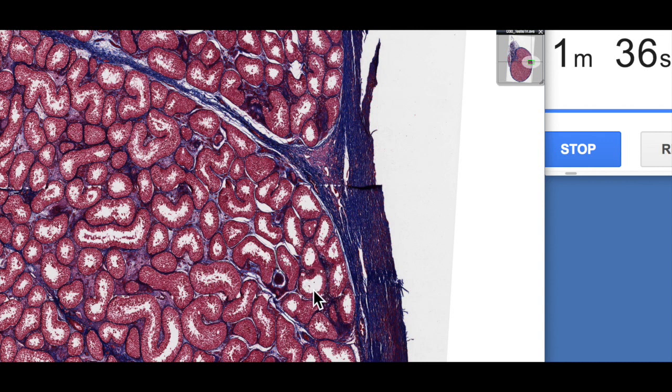These lumen here, these are actually seminiferous tubules. These are blind-ended tubules within which spermatogenesis takes place. So that's where the sperm are actually made.